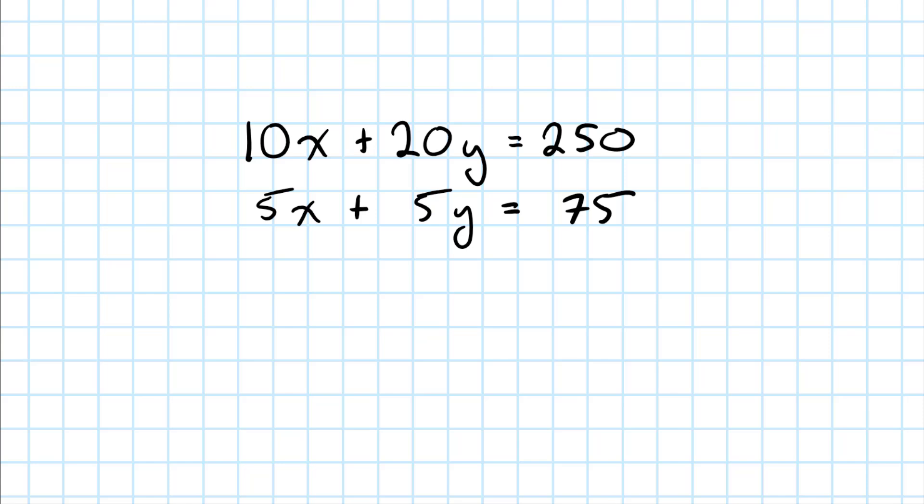Let me show you how to do this. The idea is to subtract one equation from the other. So I'd like to subtract the lower equation from the upper equation, but I have a problem because each variable has a different coefficient. In the upper equation, I have 10X. In the lower equation, 5X. But I need those coefficients to be the same. Let me show you how to deal with this.